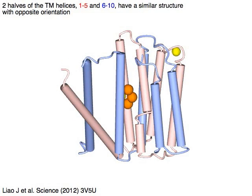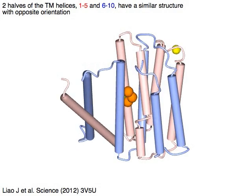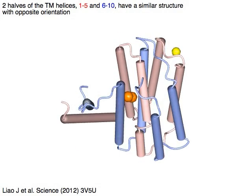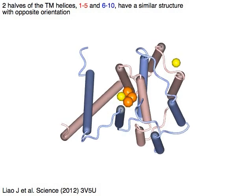Two halves of the TM helices, 1-5 in pink and 6-10 in light blue, have a similar structure with opposite orientation.